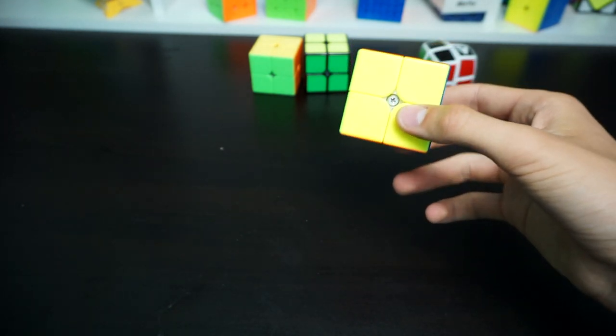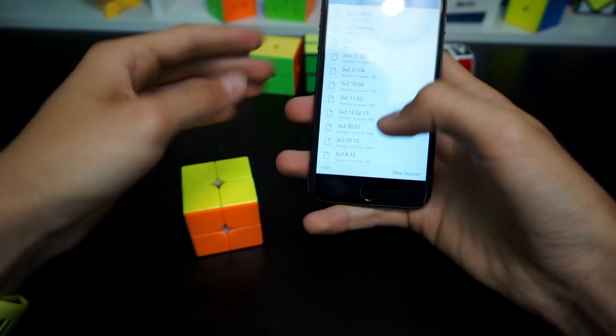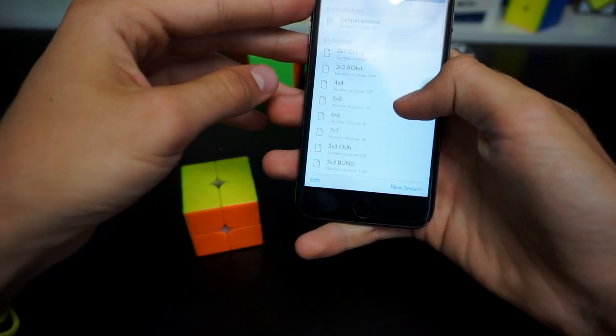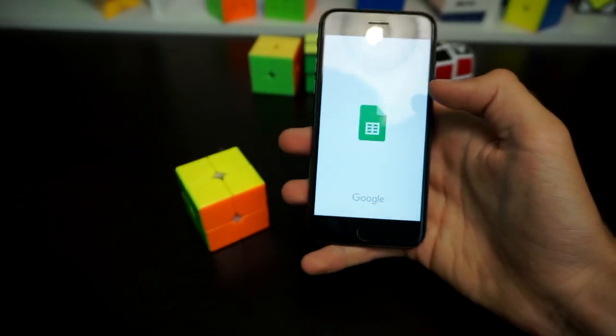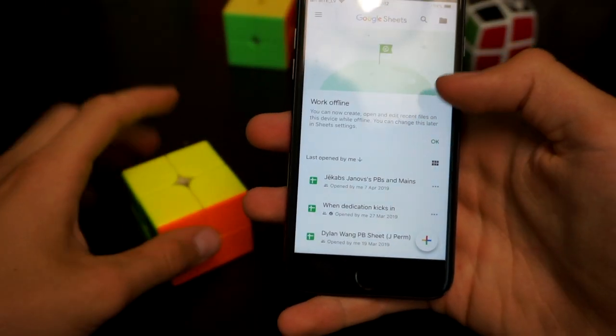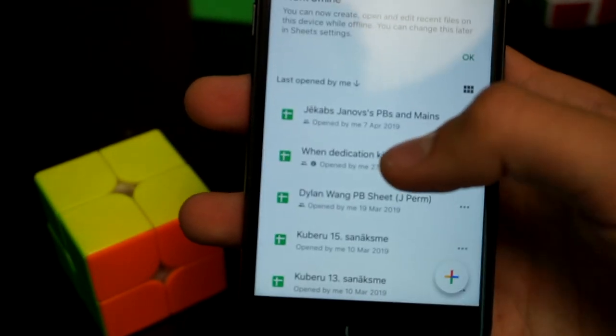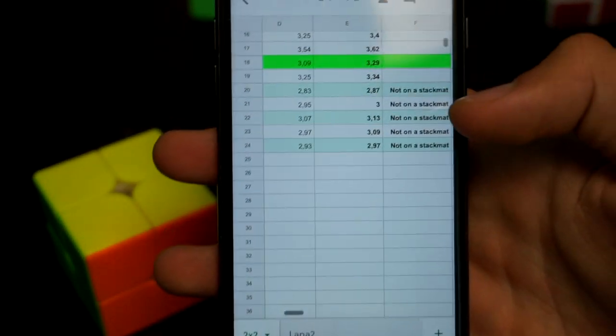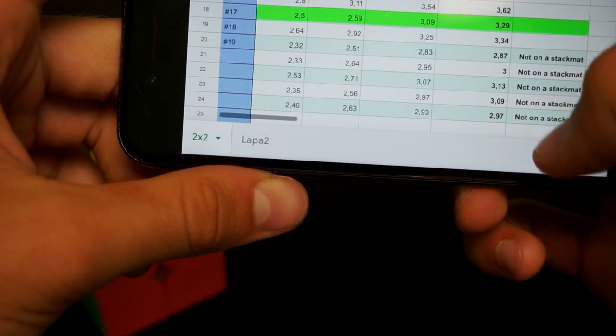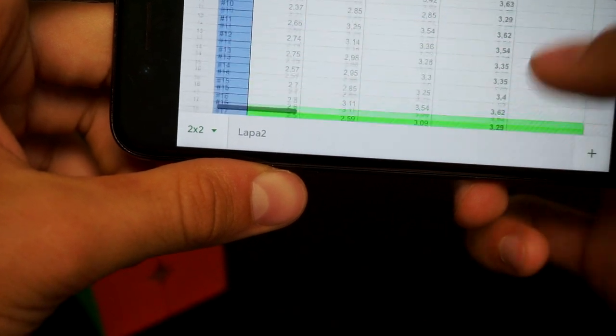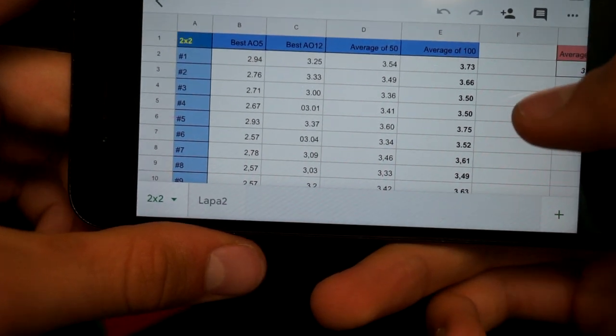And after learning CLL, as you can see, I have done 7300 solves. So this spring, I basically tried doing a challenge when dedication kicks in. As you can see, I did an average of 50. I think an average of 50. Okay, let's go up. An average of 100 every day for CLL.